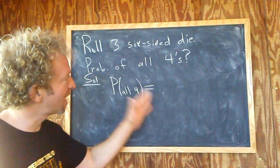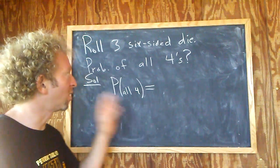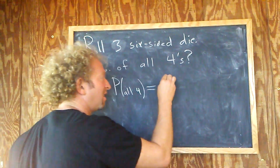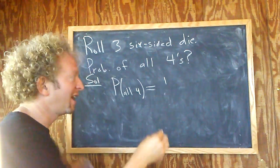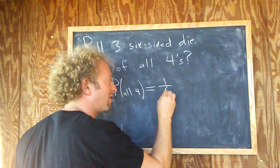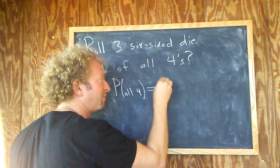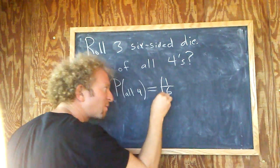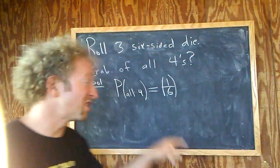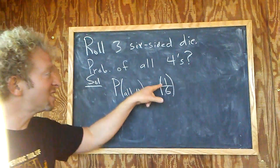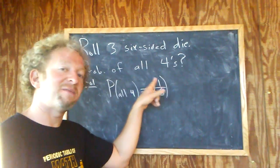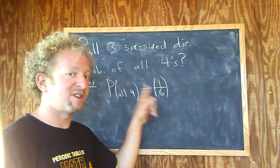We want the first die to land on a four. There's one way for the die to land on four, and there are six ways for the die to land overall. So the probability that the first die lands on four is the number of ways to land on four divided by the total number of ways to land, which is 1/6.